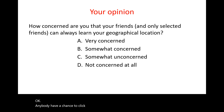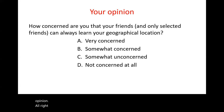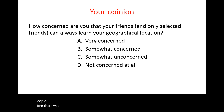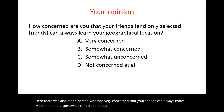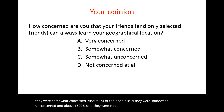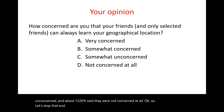Looking at the poll results on location privacy regarding friends: about one person was very concerned, most people — slightly more than half — were somewhat concerned, about a quarter were somewhat unconcerned, and about 15–20% said they were not concerned at all.